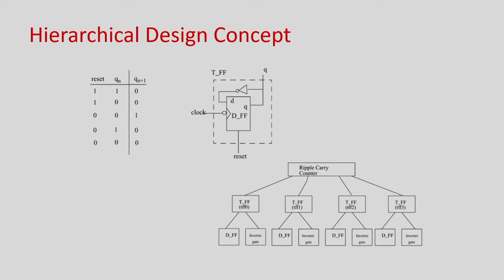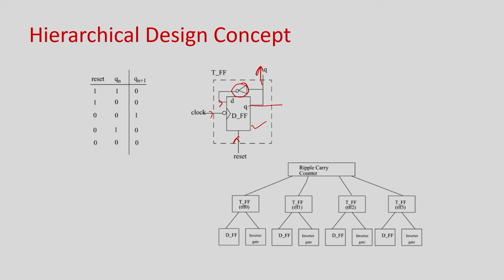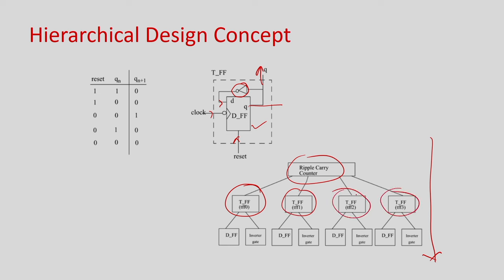Looking into what a T flip-flop is: it consists of a D flip-flop and a NOT gate. The output Q goes back as the next input every clock, and there are reset and clock inputs. So hierarchically, a T flip-flop module consists of a D flip-flop and a NOT gate. You break the ripple carry adder into 4 T flip-flops, each consisting of one D flip-flop and a NOT gate.